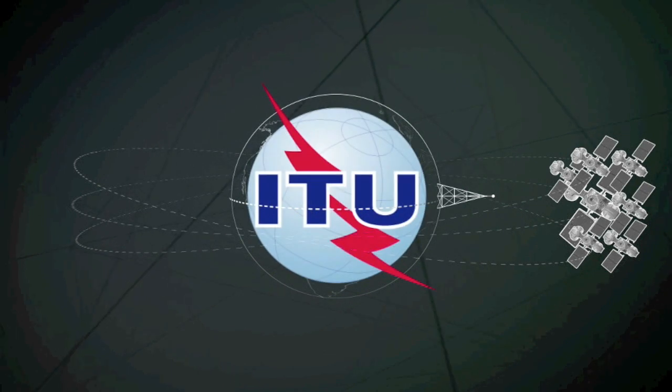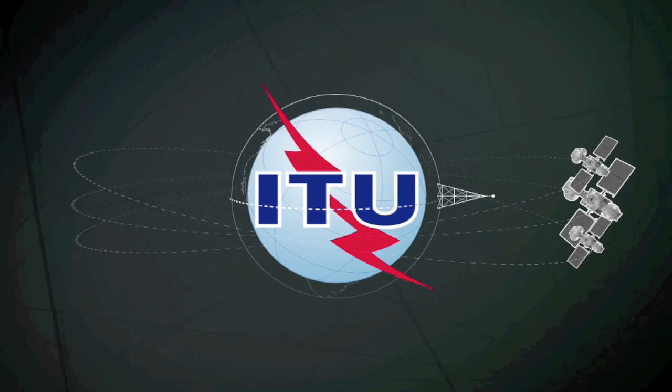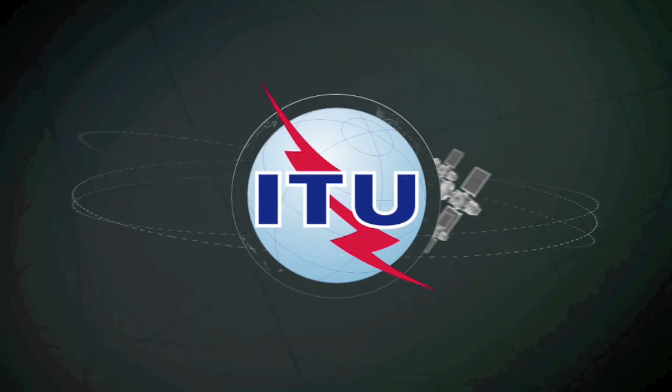To solve this challenge, the ITU is where positions for satellites are allocated and the use of particular radio frequencies is determined.